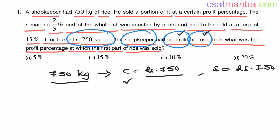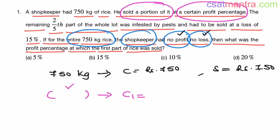Now, he has to sell the 750 kgs for 750 rupees, my friends. So that he won't get any profit or any loss. Cost price is same as selling price. So, no profit, no loss. Now, it is said that he sold a portion of it at a certain profit percentage. We don't know how many kgs of rice he sold.